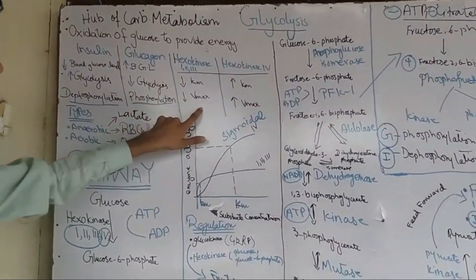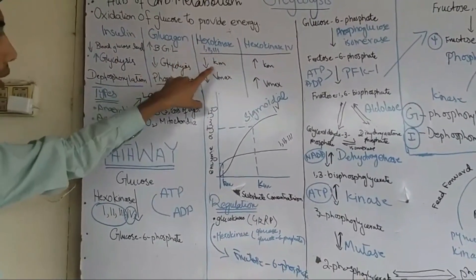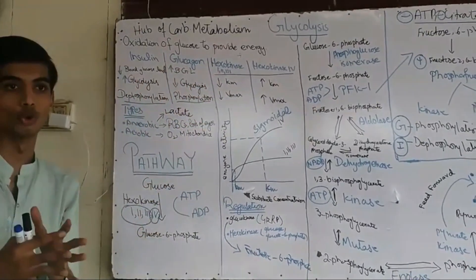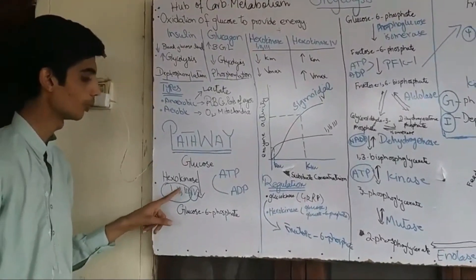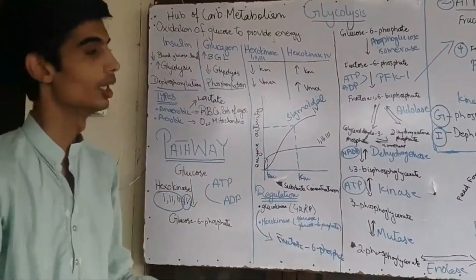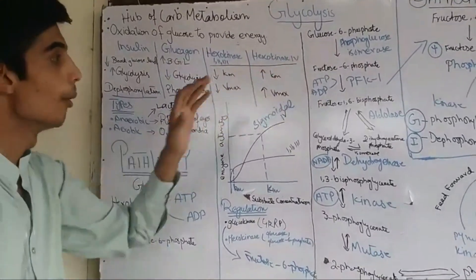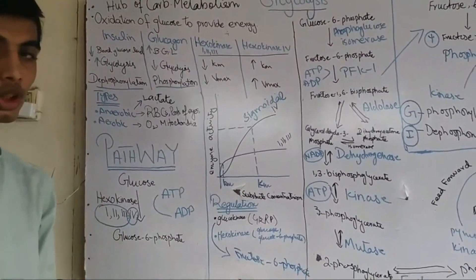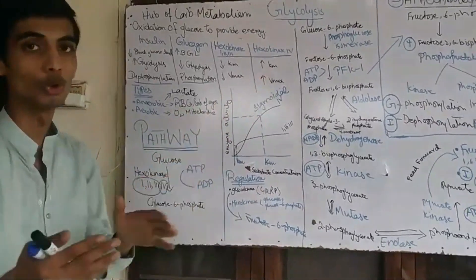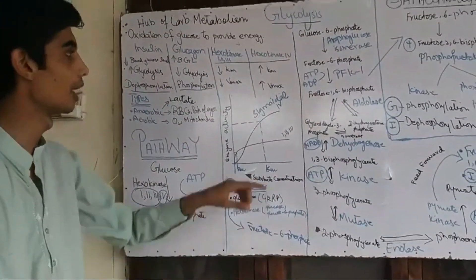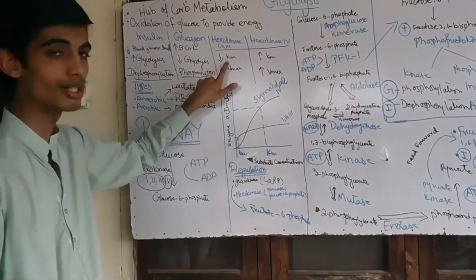The Km (Michaelis constant) for Hexokinase 1, 2, and 3 is low, meaning they have high affinity for glucose and become activated even at low glucose concentrations. Hexokinase 4 (Glucokinase) requires more glucose to be activated — its Km is high, meaning it needs a greater amount of glucose to reach half-saturation. This is important in the liver and pancreatic beta cells, where Glucokinase acts as a glucose sensor and becomes active when blood glucose rises.